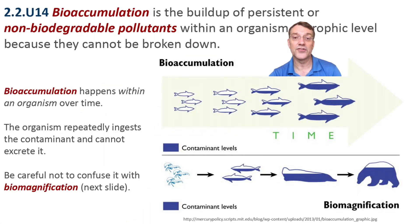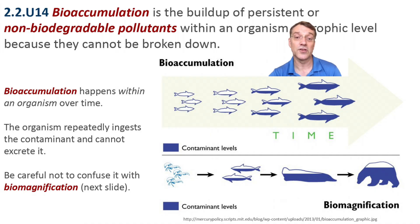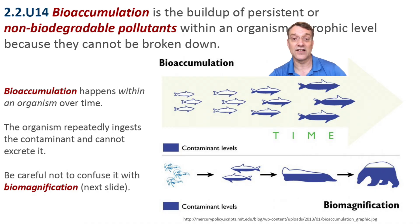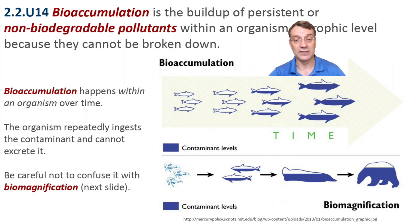Bioaccumulation occurs when persistent pollutants like DDT or mercury build up within an individual organism over time because those substances can't be broken down or excreted by metabolic processes. This happens when the rate of intake of that substance exceeds the rate at which it is eliminated or degraded.